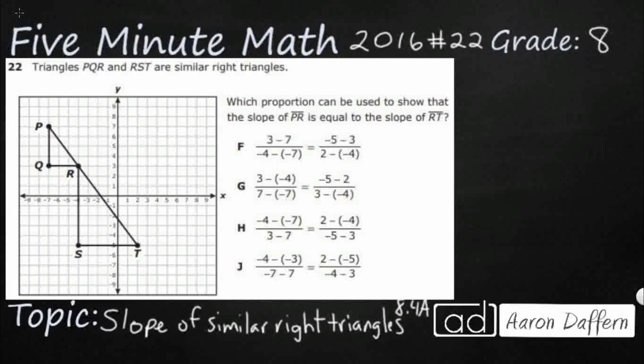Hello and welcome to 5-Minute Math. Today we are looking at the eighth grade concept of slope of similar right triangles. This is standard 8.4a in the great state of Texas, and we are using item number 22 off the 2016 released STAAR test. Please go ahead and pause the video, work this problem out on your own, then unpause it and we will look at our answers together.